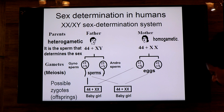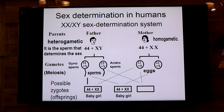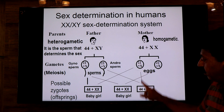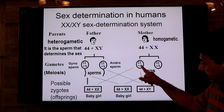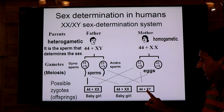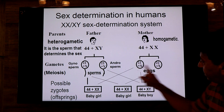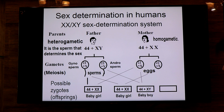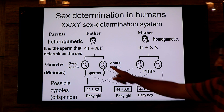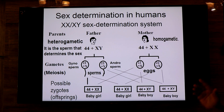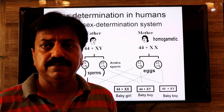If the androsperm fuses with an egg, the zygote will have 44 + XY — 22 autosomes from the sperm, 22 from the ovum, giving 44 autosomes, plus X from the egg and Y from the sperm. The zygote with XY will develop into a male baby boy. This holds for both possible androsperm combinations — in each case the result is 44 + XY, a baby boy.